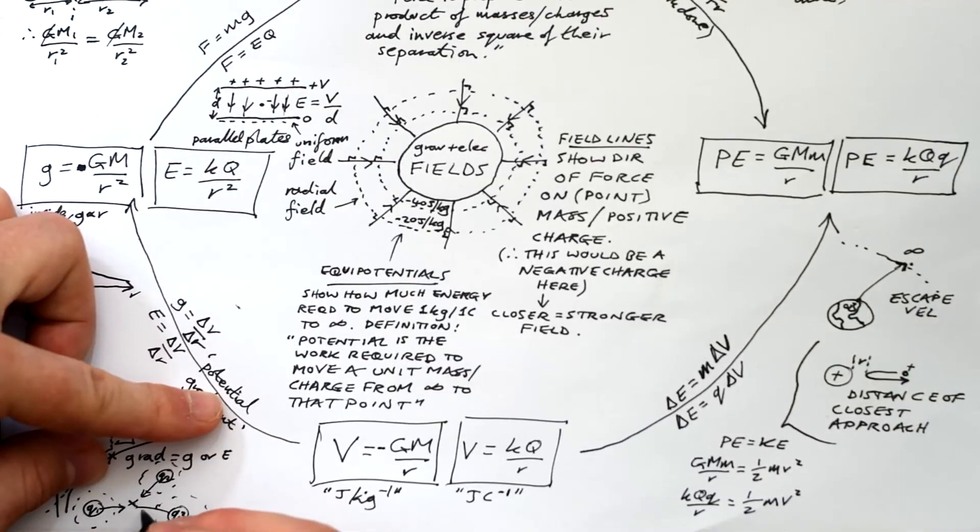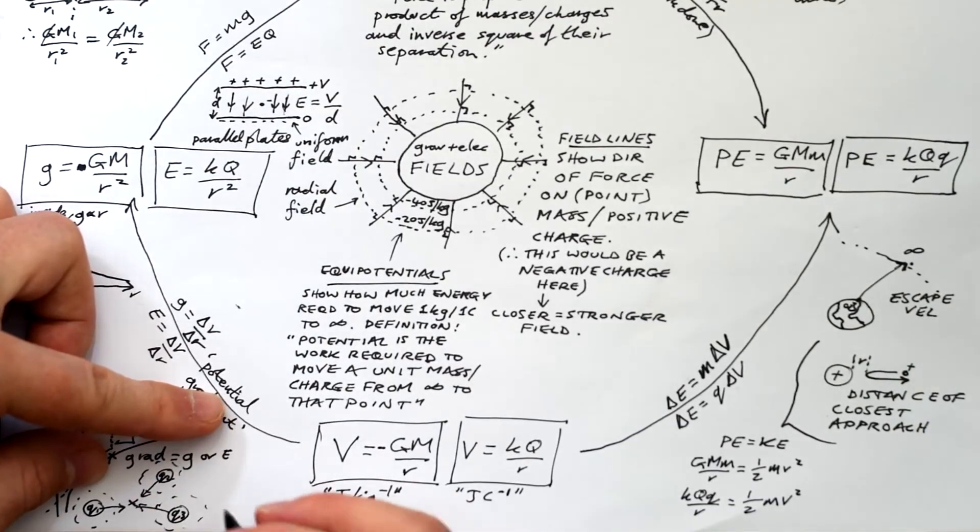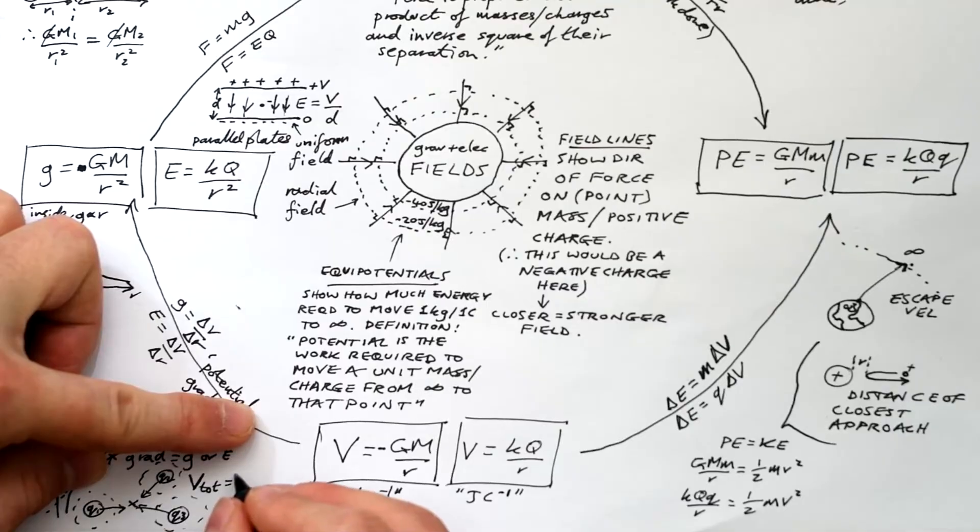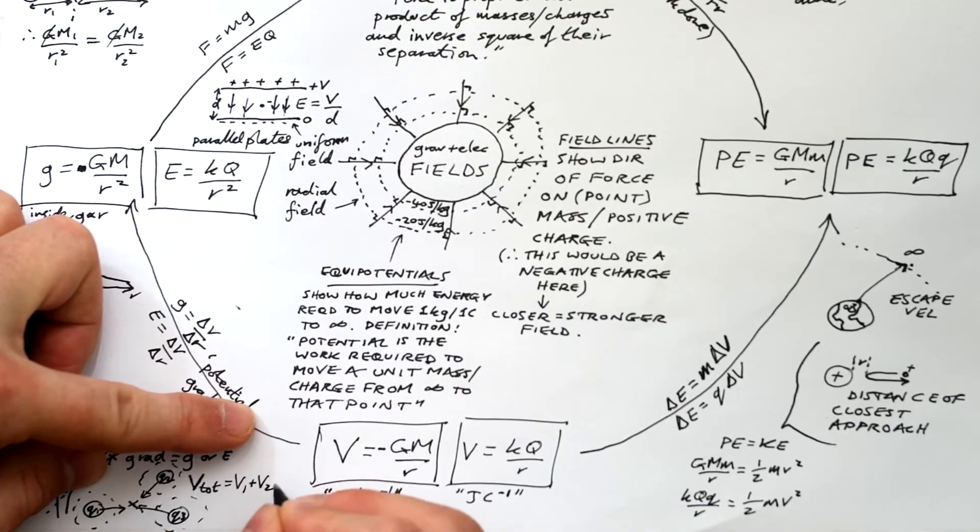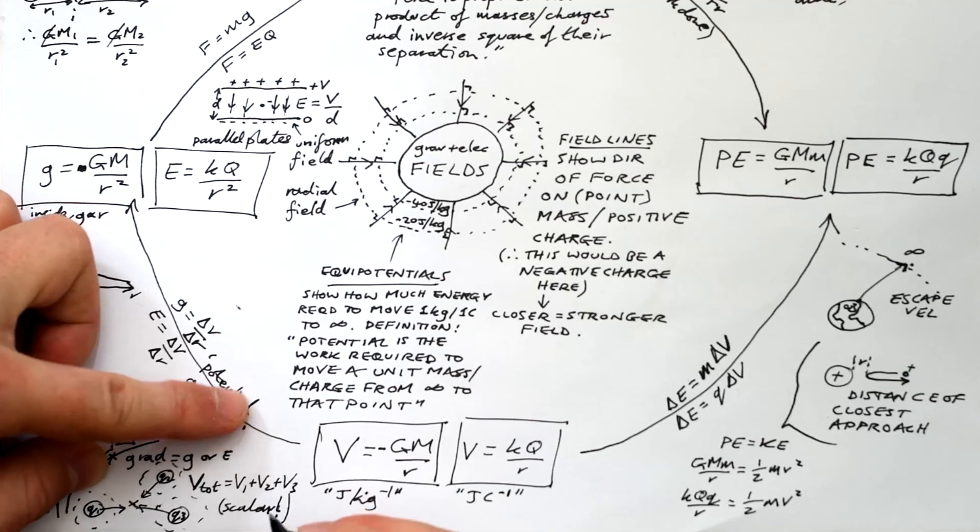But for potential, it doesn't matter how many charges we have providing a potential or where they are. All we do to find the resultant potential at any point is add up all of the potentials. So just Gm over r plus Gm over r, or kQ over r plus kQ over r, because it is a scalar.